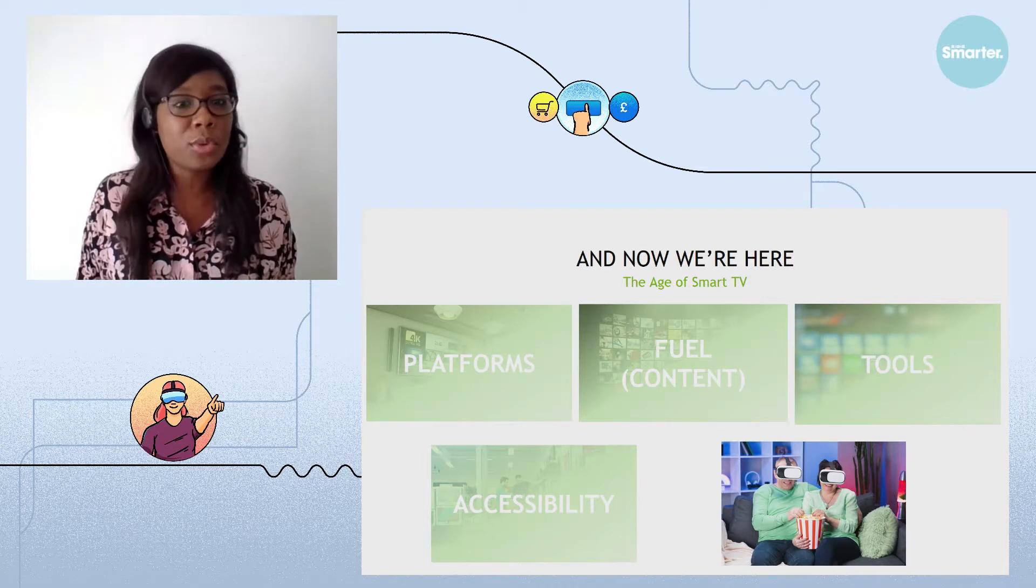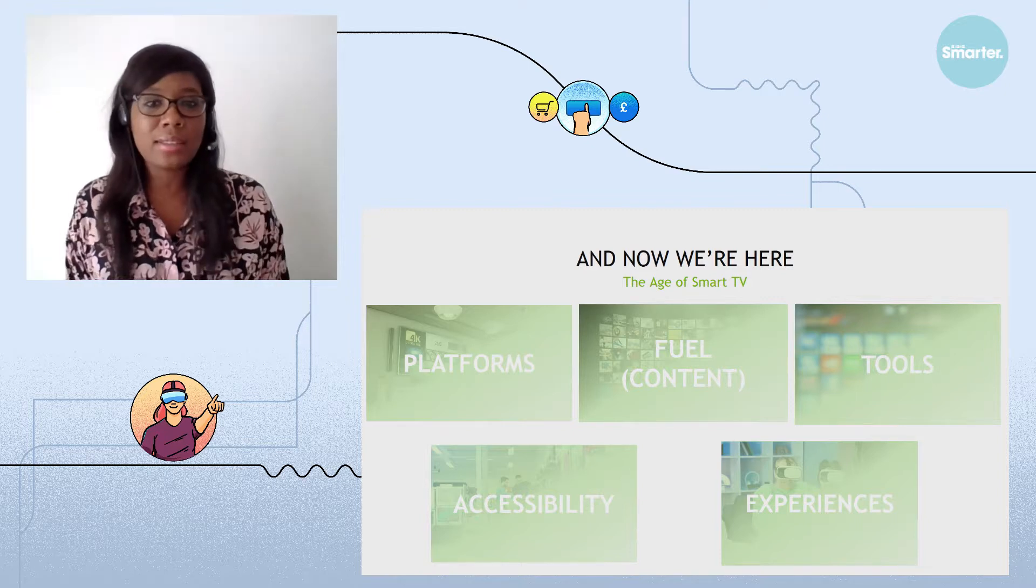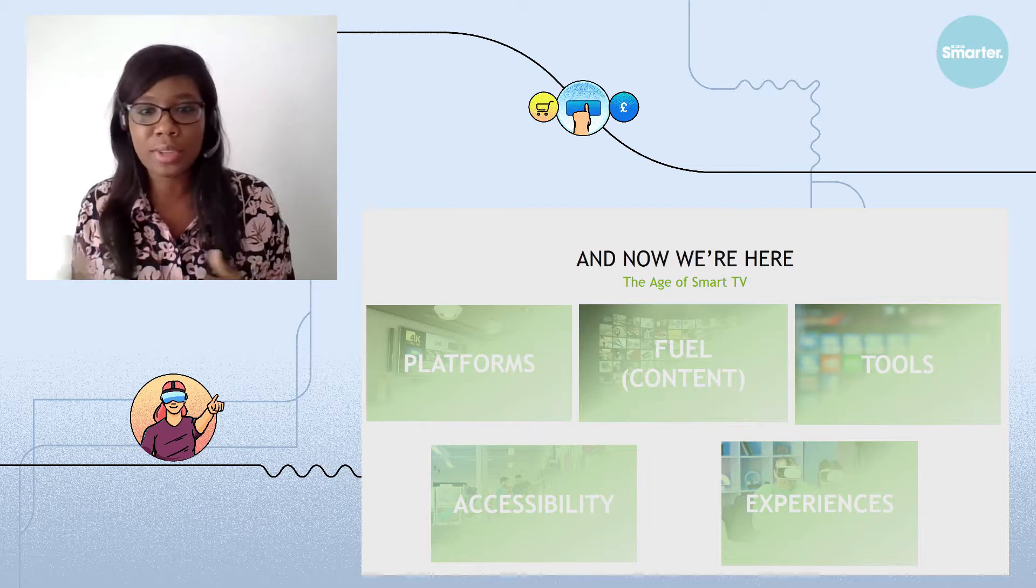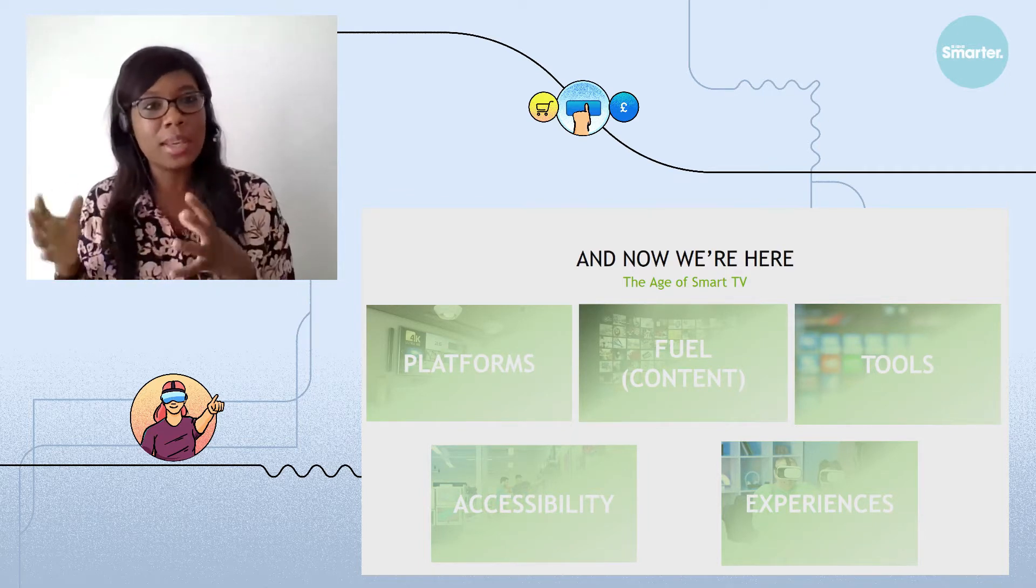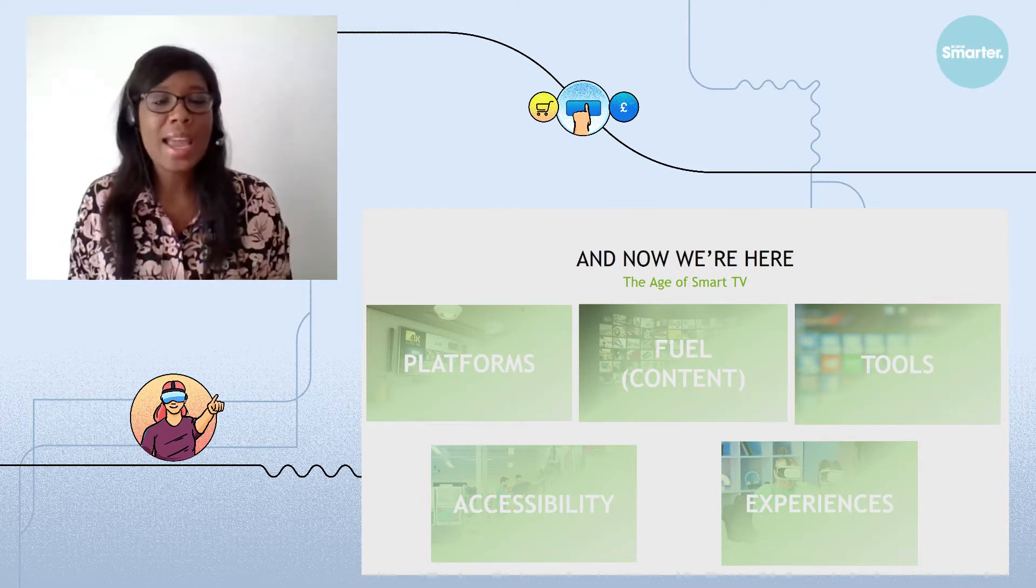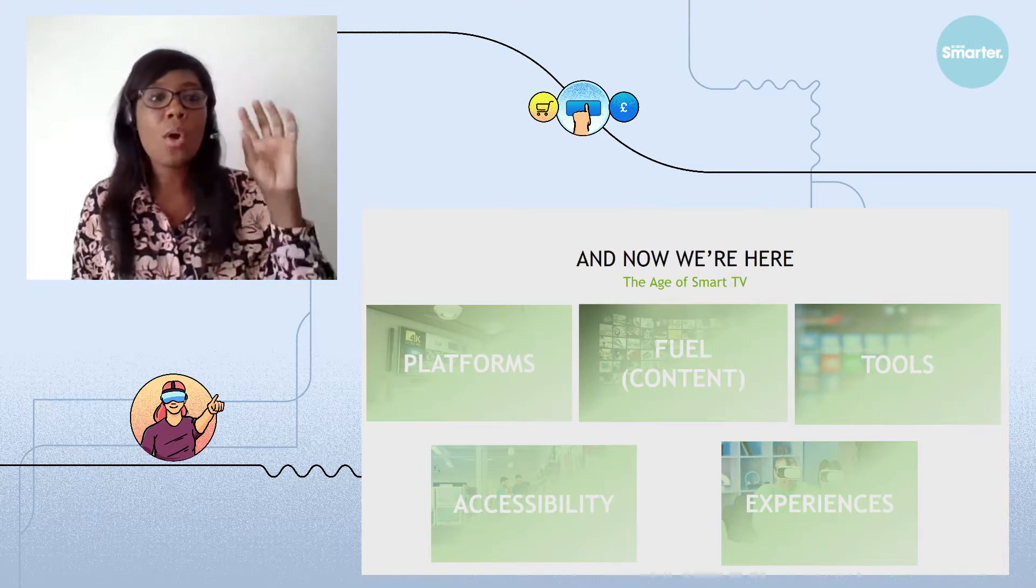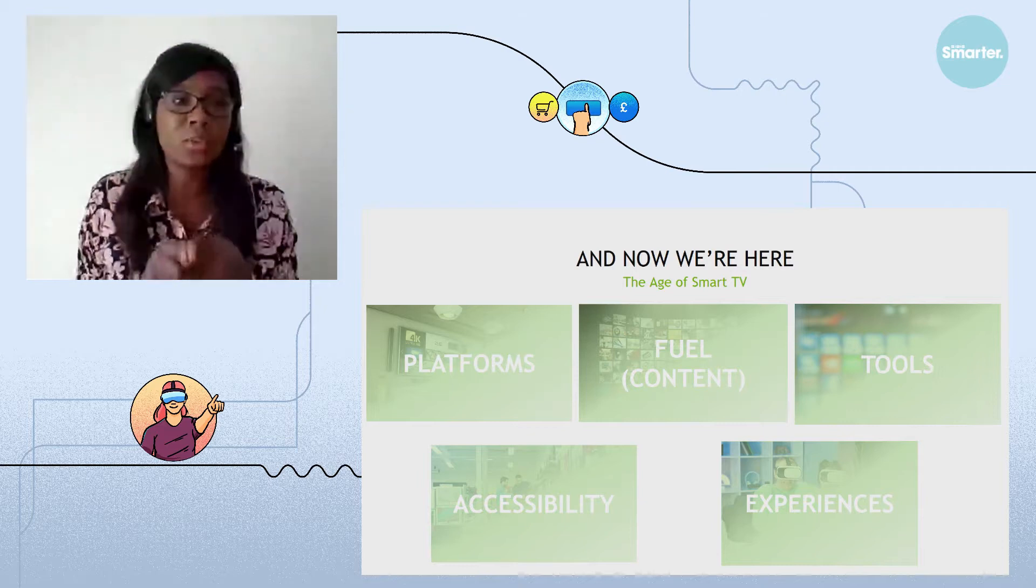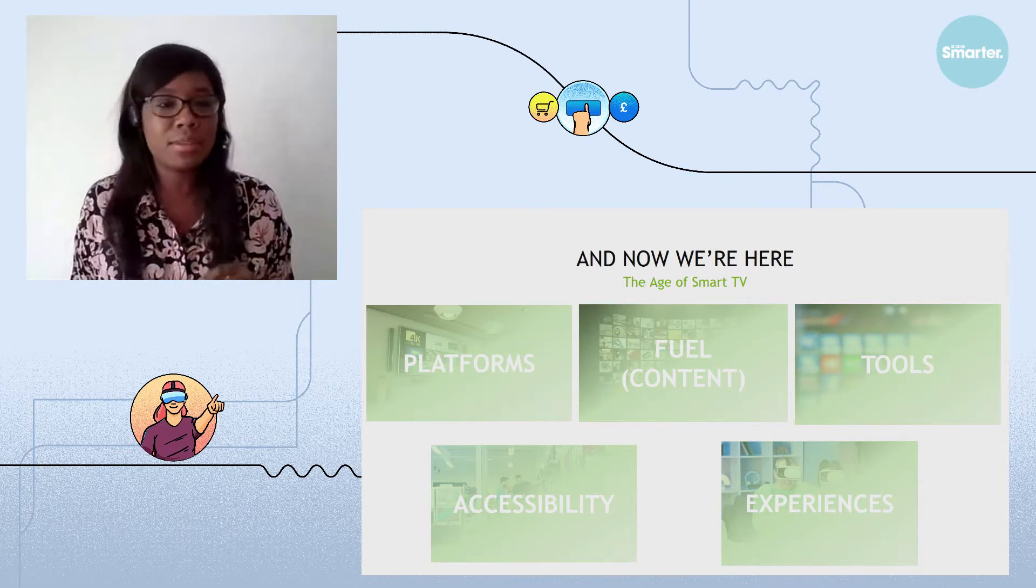Last but not least, we've also made improvements in terms of experiences. And the TV now is a hub for playing video games, watching movies and Blu-rays. But that's actually how we got there within those 70 years. And the reason why it's called an ecosystem is because one without the other wouldn't deliver the TV experience that we know of today. For it to work, they must evolve altogether.